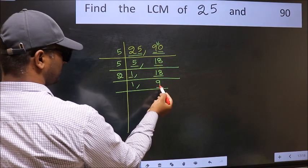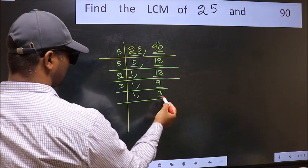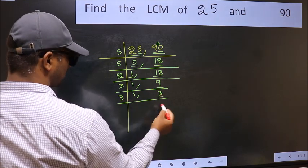Now here we have 9. 9 is 3 times 3 equals 9. Now here we have 3. 3 is a prime number, so 3 times 1 is 3.